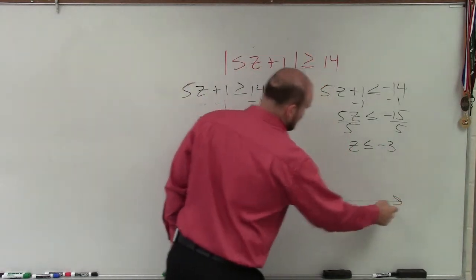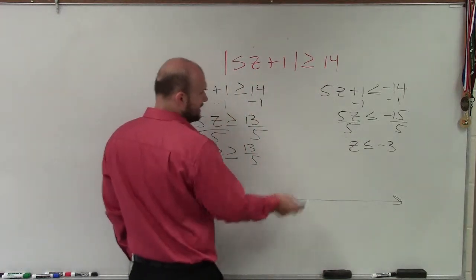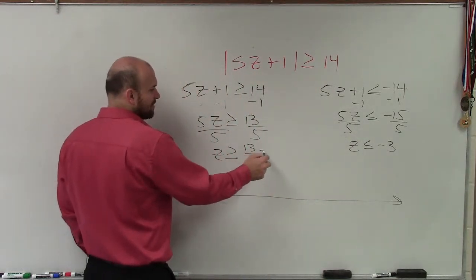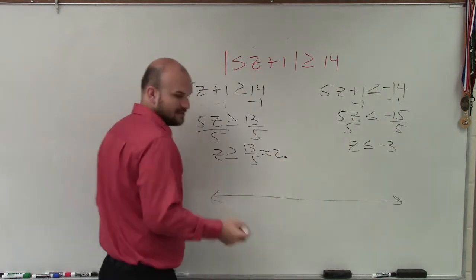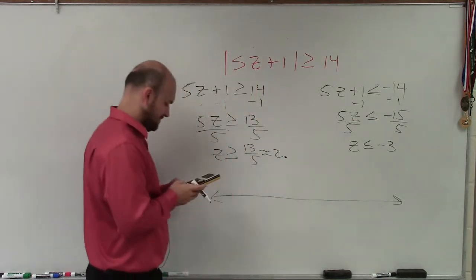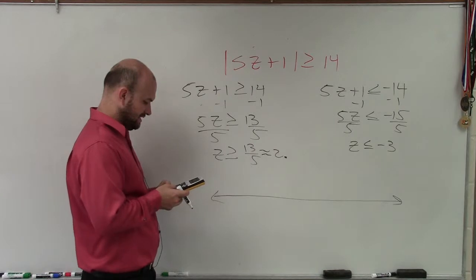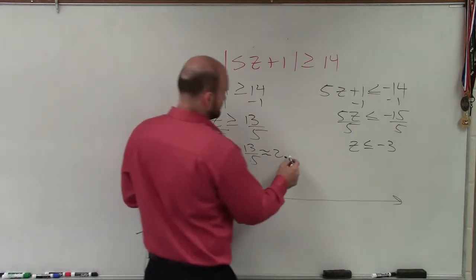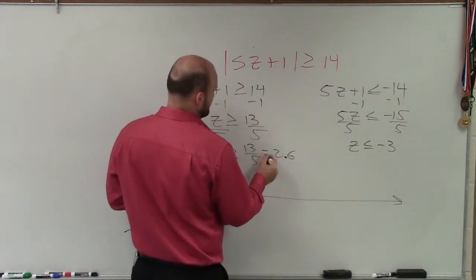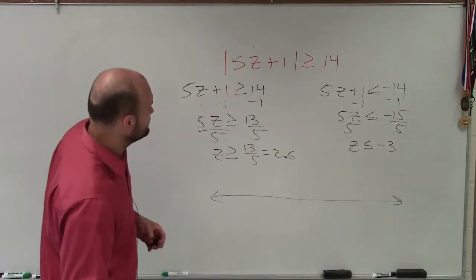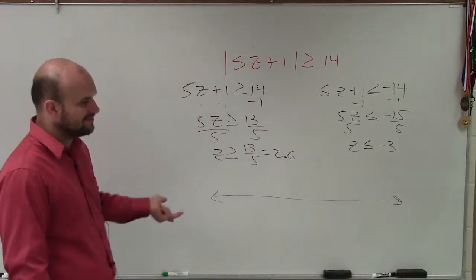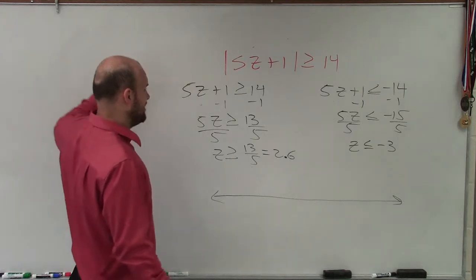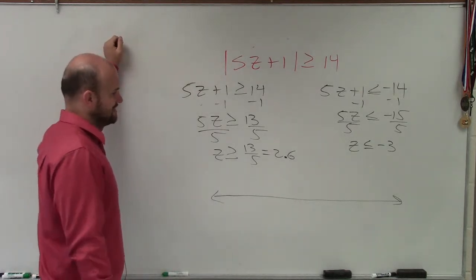So now, I'm going to go and graph these on the same line. And I notice that this is roughly approximately like 2 point something. 13 divided by 5 is 2.6. It's actually not approximate, so it actually equals 2.6, which would be 3 fifths, which would be 6 tenths.